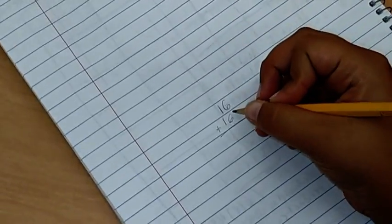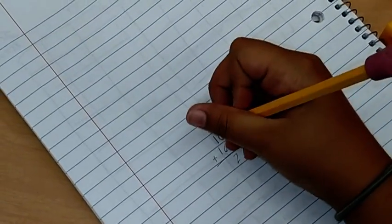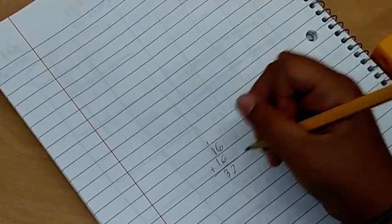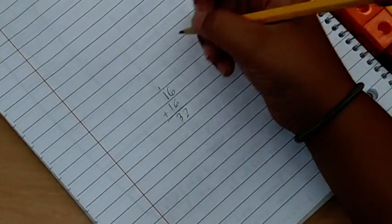And then 6 plus 6 equals 12, and then there's 3, and it equals 32. Right. And are those 1s, or what does that 1 represent? That equals the 10 for the 12. Gotcha.